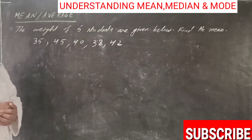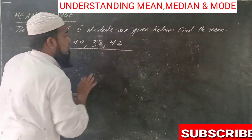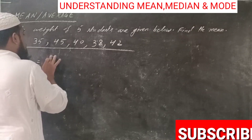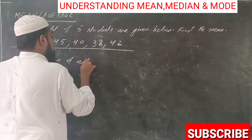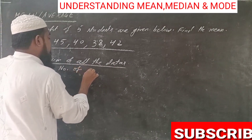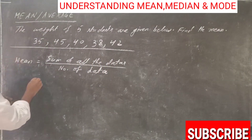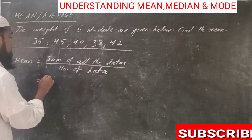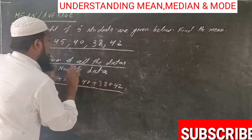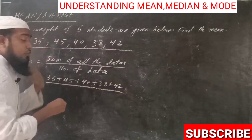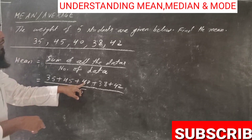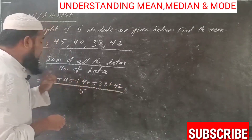Here we have the weights of five different students and we need to find out the mean. Mean can be calculated as: mean is equal to the sum of all the data divided by the number of data. So we need to add all the values: 35 plus 45 plus 40 plus 38 plus 42. Adding these gives us 200, and we divide 200 by 5.